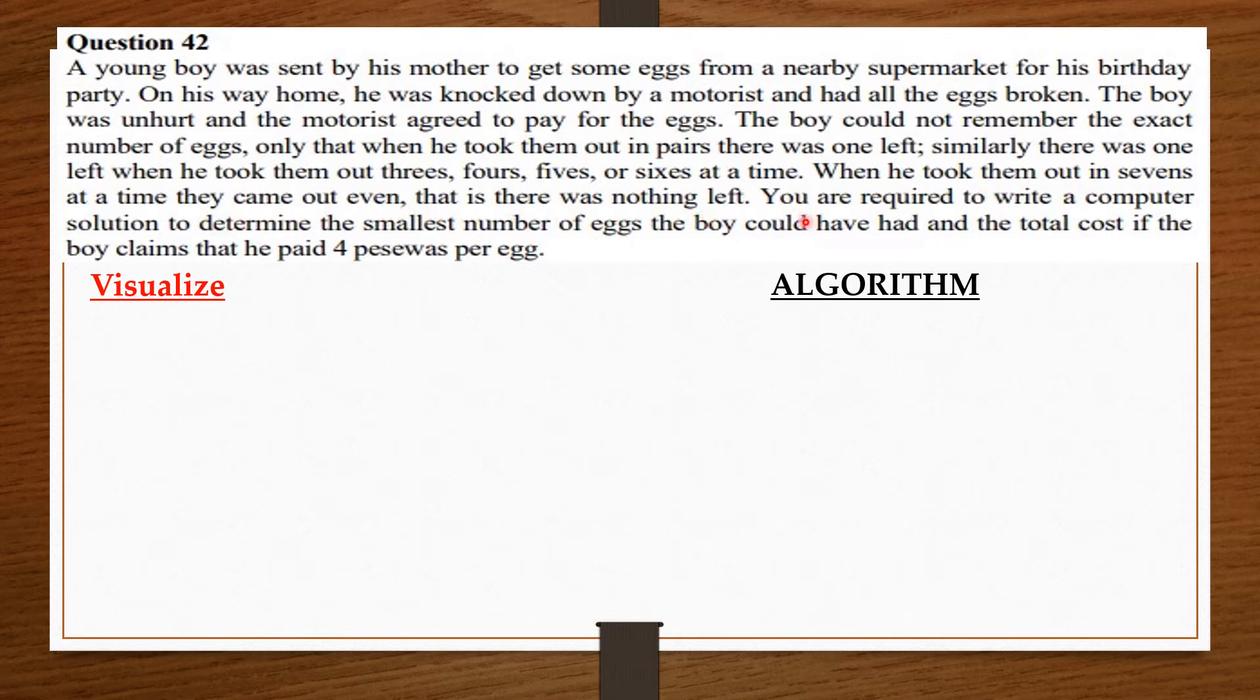You are required to write a computer solution to determine the smallest number of eggs the boy could have had and the total cost if the boy claims he paid 4 pesos per egg.